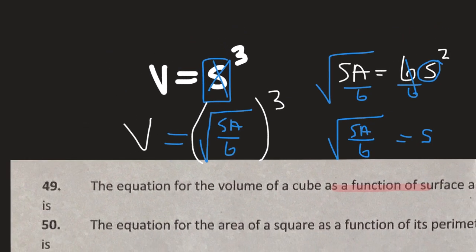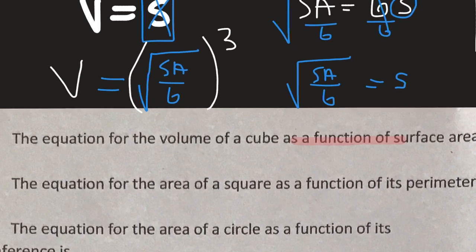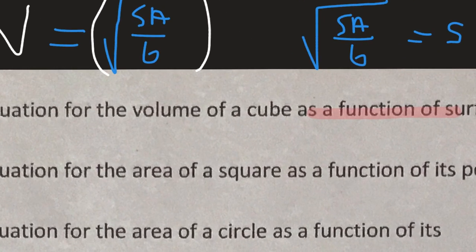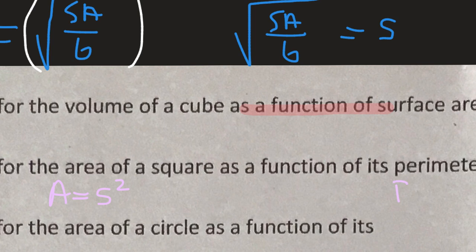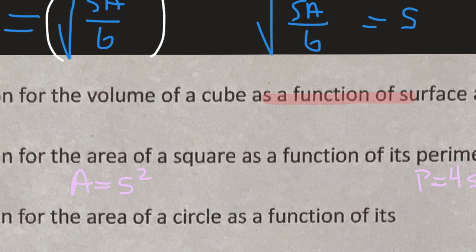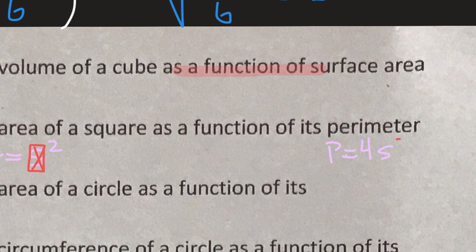The equation for the area of a square as a function of its perimeter. So area of a square is s squared — side length squared. And perimeter is 4s, because s plus s plus s plus s is 4s. So I want to get rid of s in my area equation.